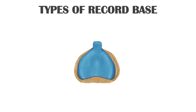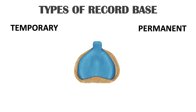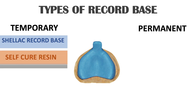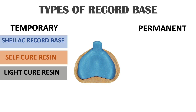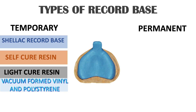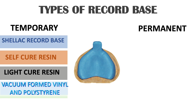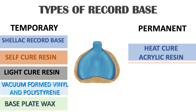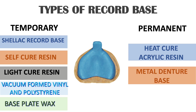There are two types of record bases: temporary and permanent. Under temporary, we have shellac record base, self-cure resin, light-cure resin, vacuum-formed vinyl, polystyrene, and base plate wax. Under permanent, we have heat-cure acrylic resin, metal denture base, and gold.